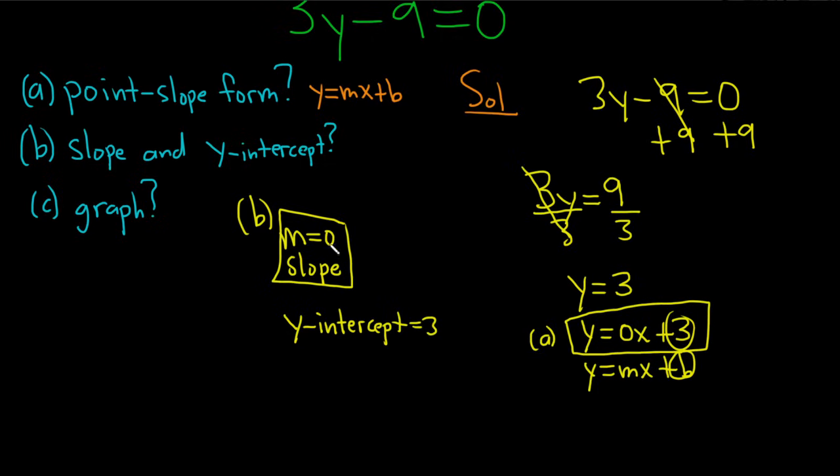As an ordered pair, it's y equals 3, so the y-coordinate is 3 and the x-coordinate is always 0.